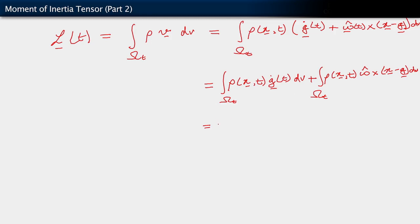We have not yet used a symbol for mass, but let's use little m because we're using dm as the elemental mass. So here we have m·ġ.